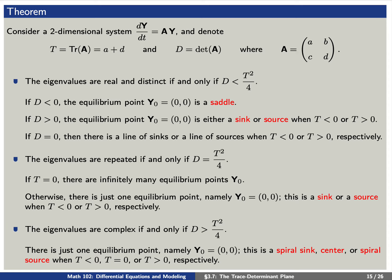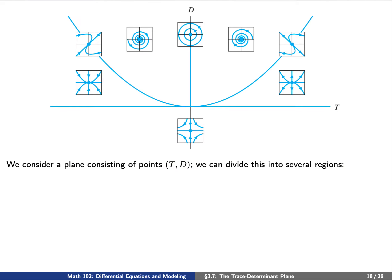There's a lot of information in this theorem, so let's give a graphical interpretation. We have information in terms of the trace T and determinant D, so we consider a plane consisting of points (T, D) which we can divide into several regions. First, we can consider the region where D < 0 — that is, below the T-axis. In this case we have real eigenvalues which are distinct, and all direction fields will contain saddles.